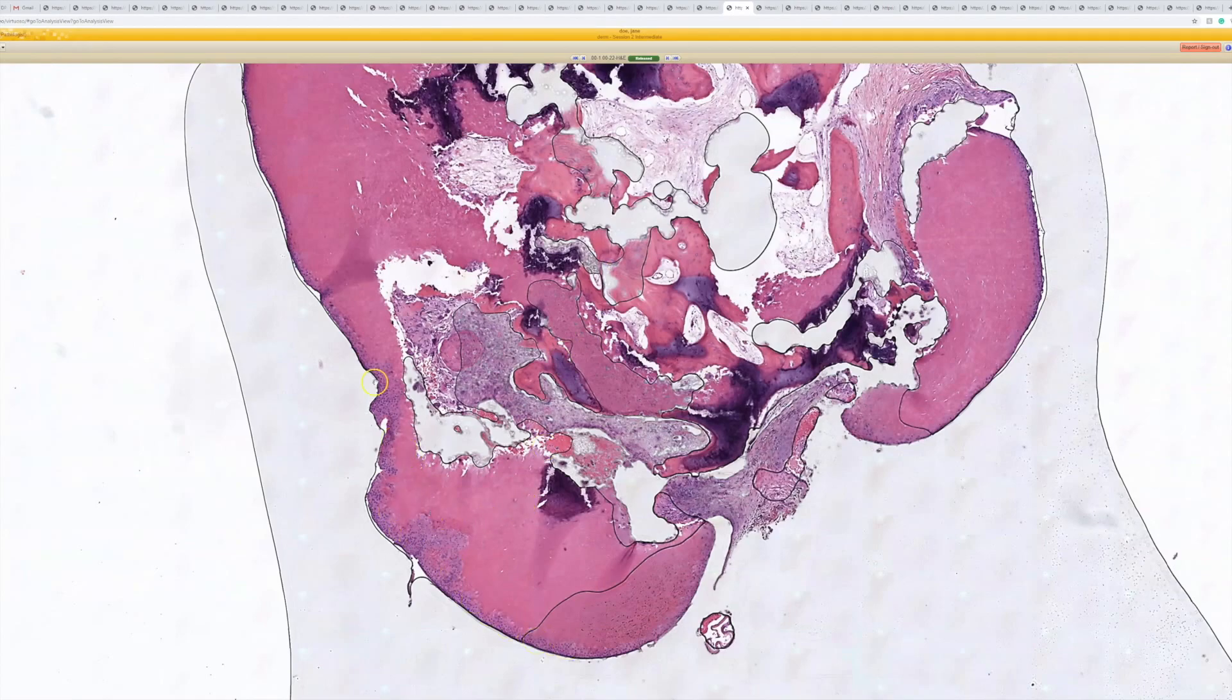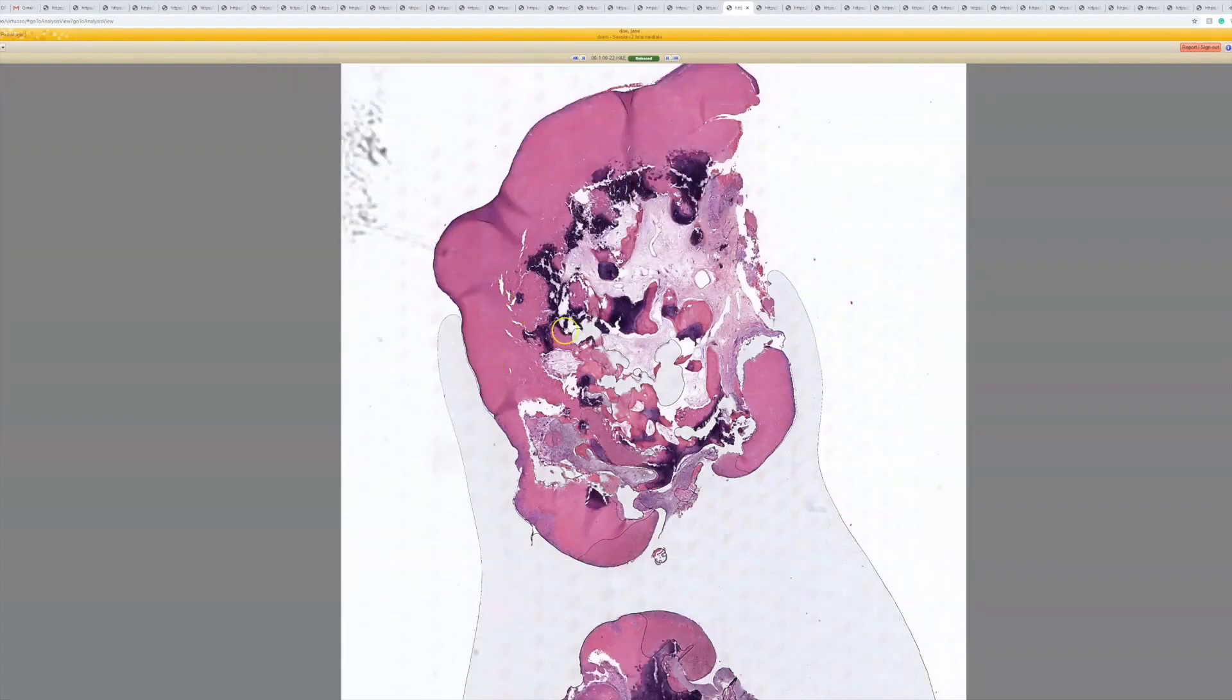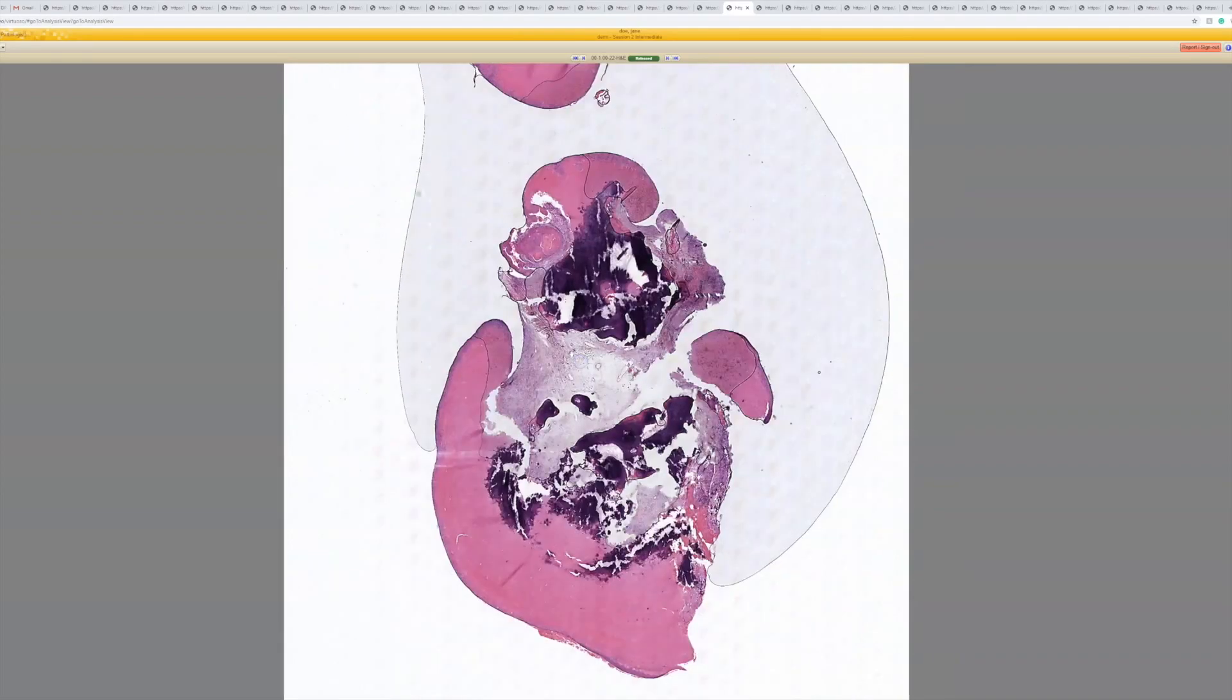But here we've got the nice pilar cyst lining. So this is a pilar cyst or tricholemol cyst with metaplastic bone formation and calcification. Really nice example.